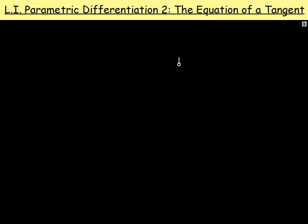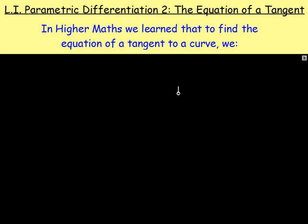Before we get into this, I want you to think back to higher maths when we were looking at the equation of a tangent. A tangent is a straight line, so what we're wanting is the equation of a straight line. To get the equation of a straight line you need the gradient, a point, and then the equation. We need the gradient of the curve at that point, and then we can substitute into y minus b equals m bracket x minus a.